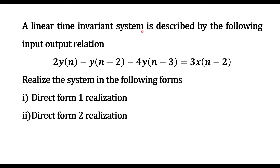A linear time invariant system is described by the following input-output relation: 2y(n) minus y(n-2) minus 4y(n-3) is equal to 3x(n-2). Realize the system in the following forms: direct form 1 realization and direct form 2 realization.